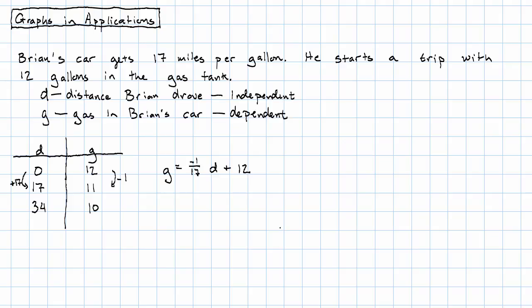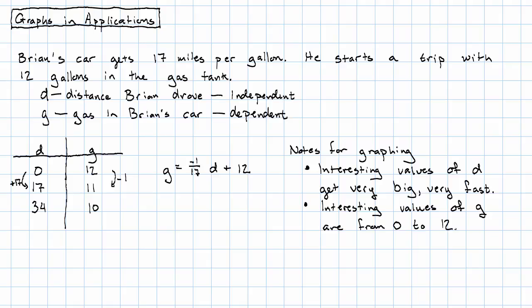Now say we want to graph this. Notice that the values of D that we're going to be interested in get very big very fast. On the other hand, the only values of G that we're interested in are from 0 up to 12.